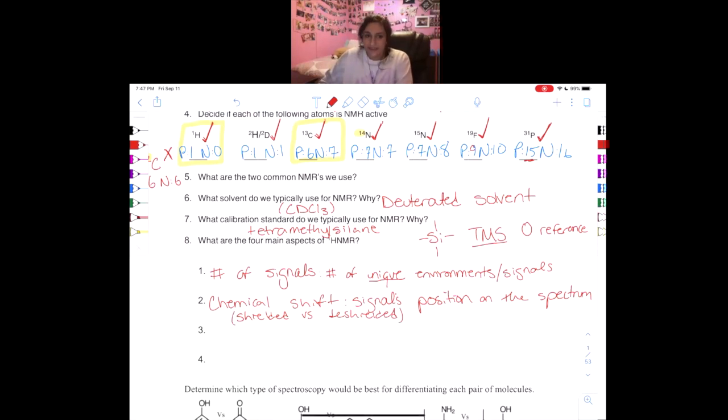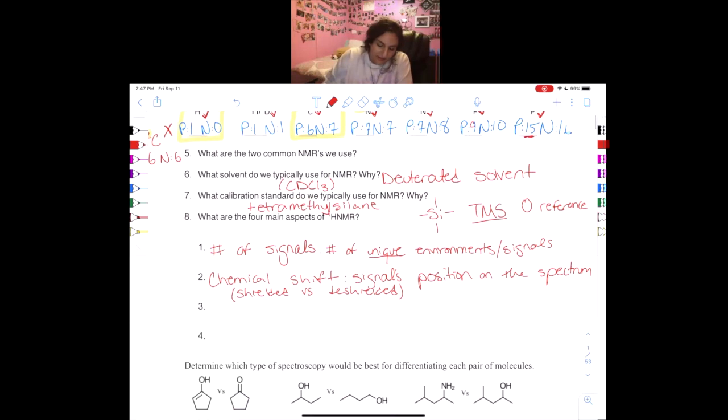Number three is multiplicity and splitting. So the multiplicity, aka splitting, is just the number of neighboring hydrogens. Very important. You have to know that multiplicity and splitting is only among hydrogens. That's why I specifically said H. This does not happen in carbon NMR.